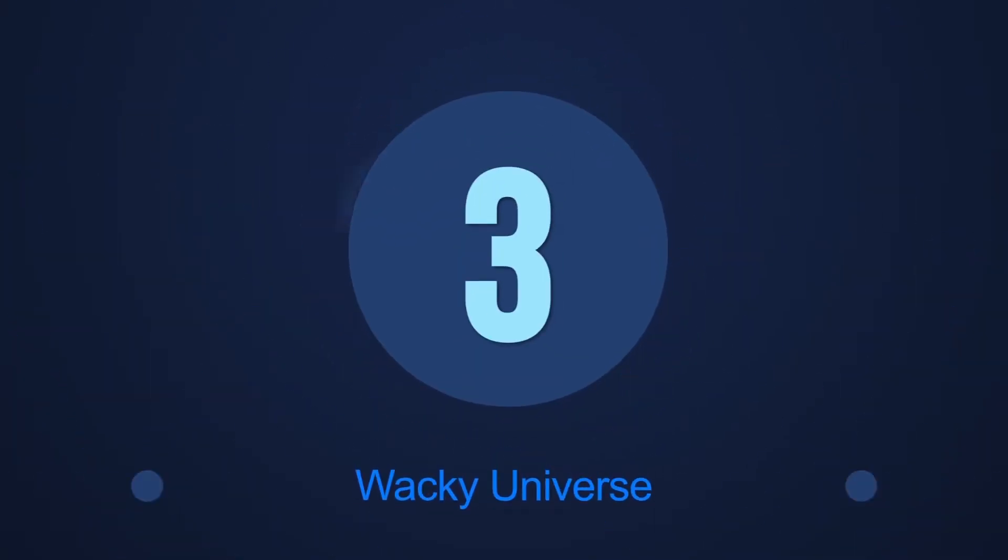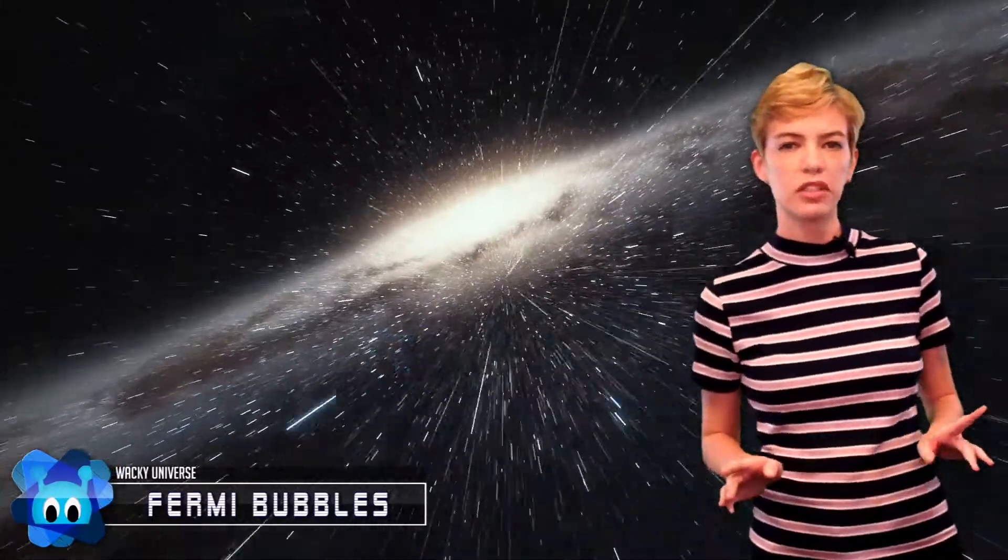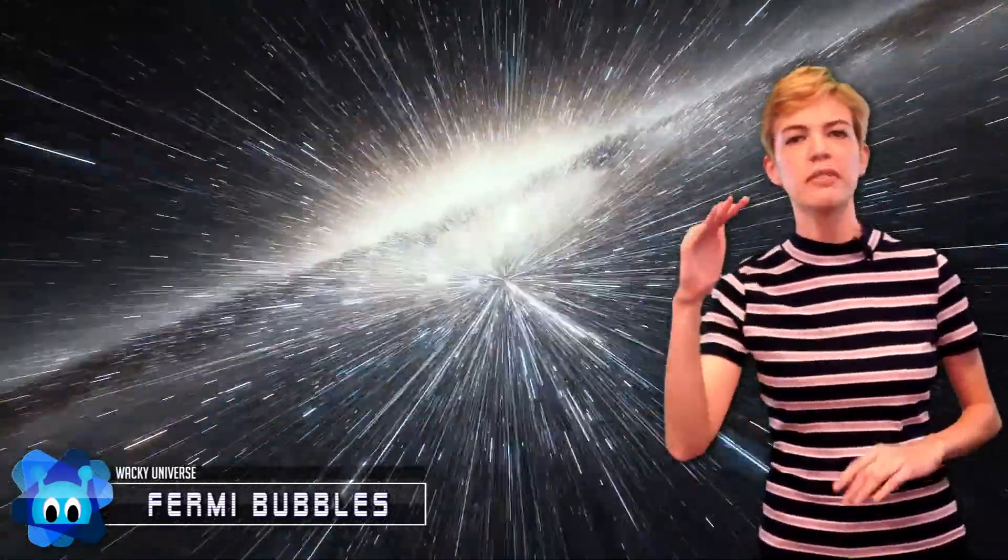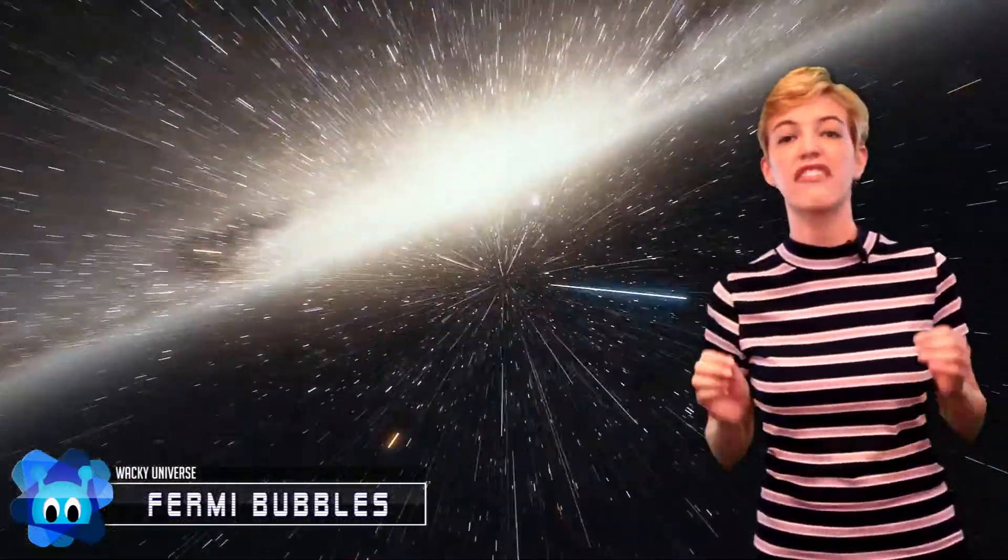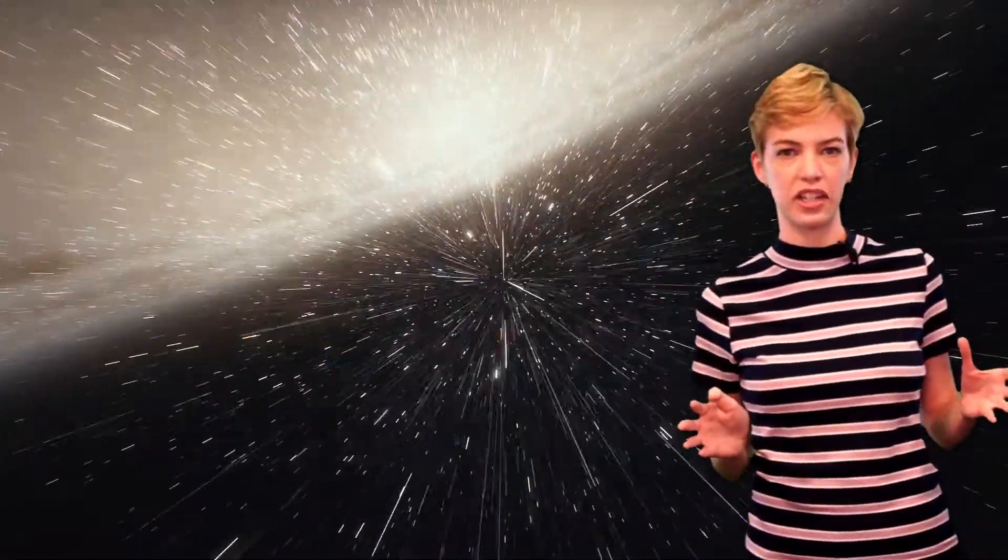Number 3: Fermi Bubbles. In 2010, astronomers found two giant blobs above and below the Milky Way's core that were giving off immense amounts of high energy radiation. These blobs, the Fermi bubbles, hover for 25,000 light years around our galaxy's center in a cosmic sandwich.